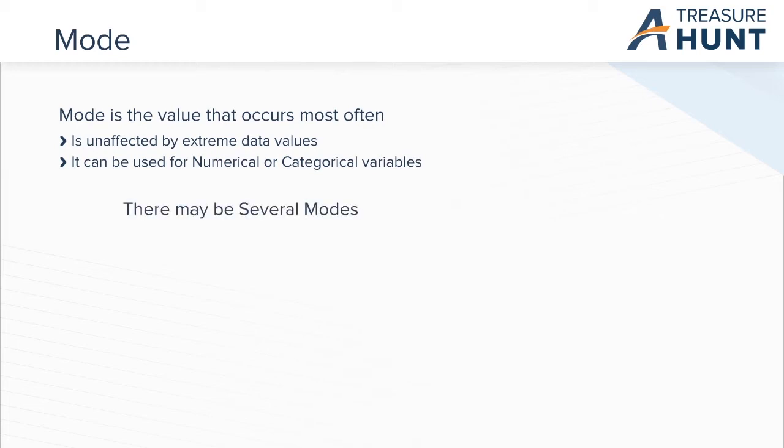Please note, there can be more than one mode for a data set. For example, as you look at the diagram on the left, the numbers 6 and 12 each appear thrice in the data set. In this example, there are two modes, 6 and 12.